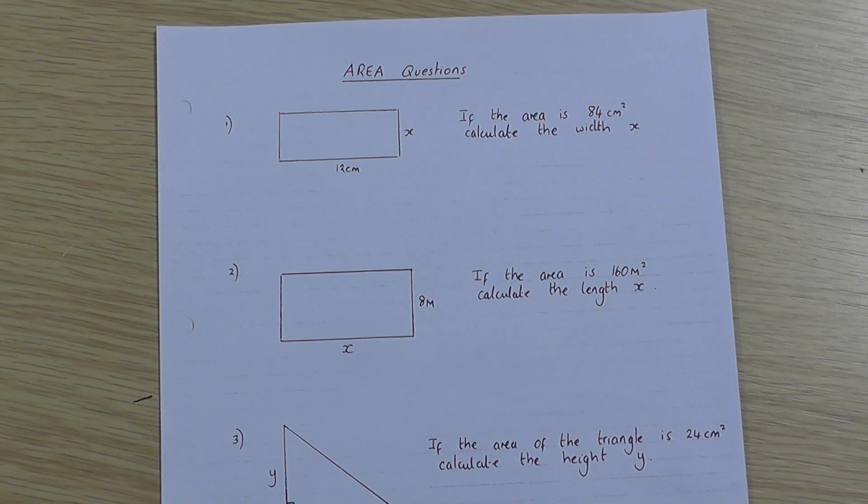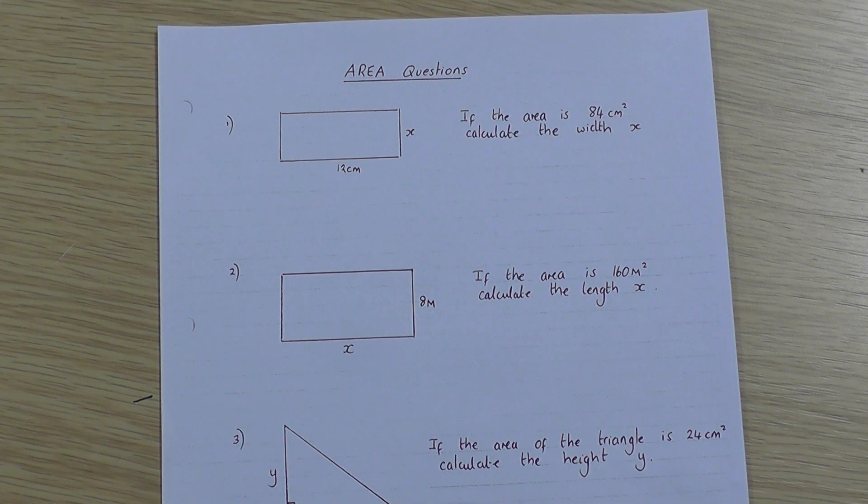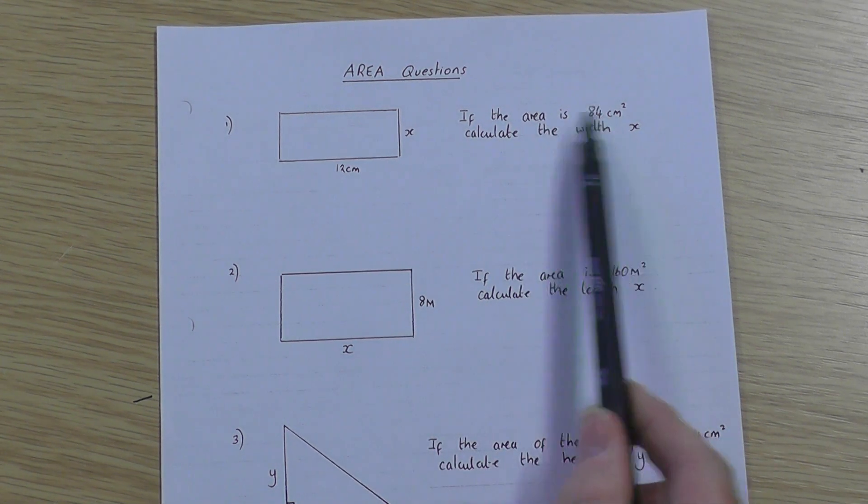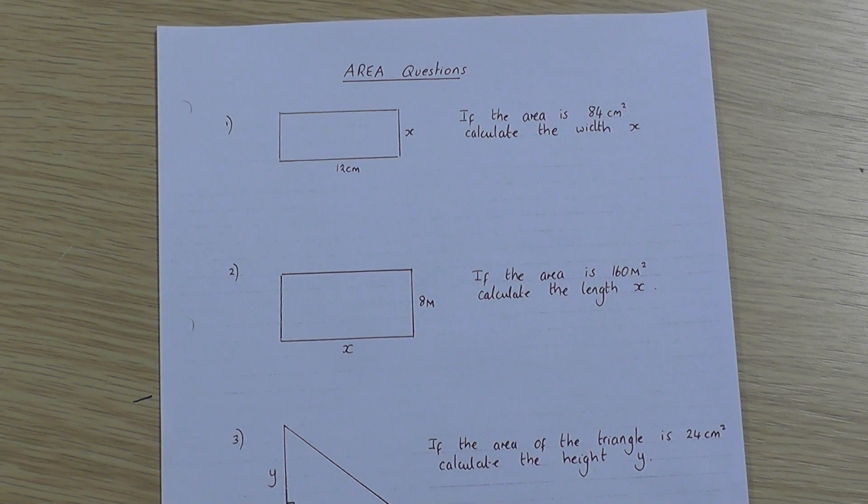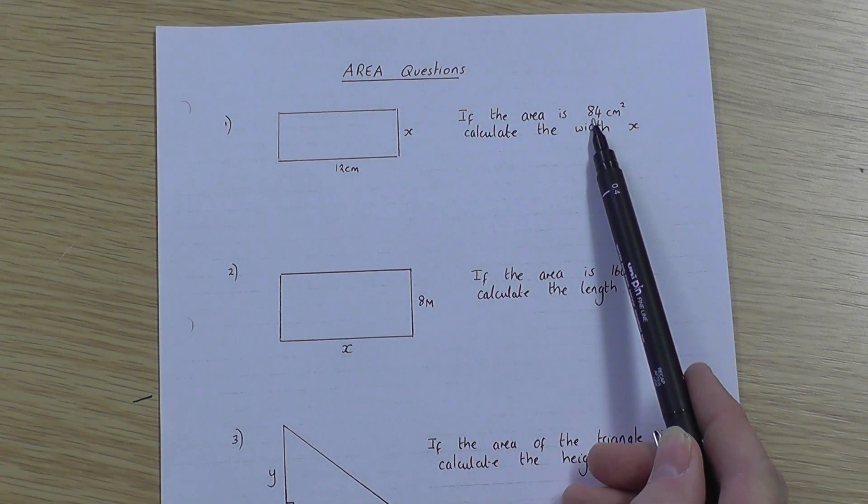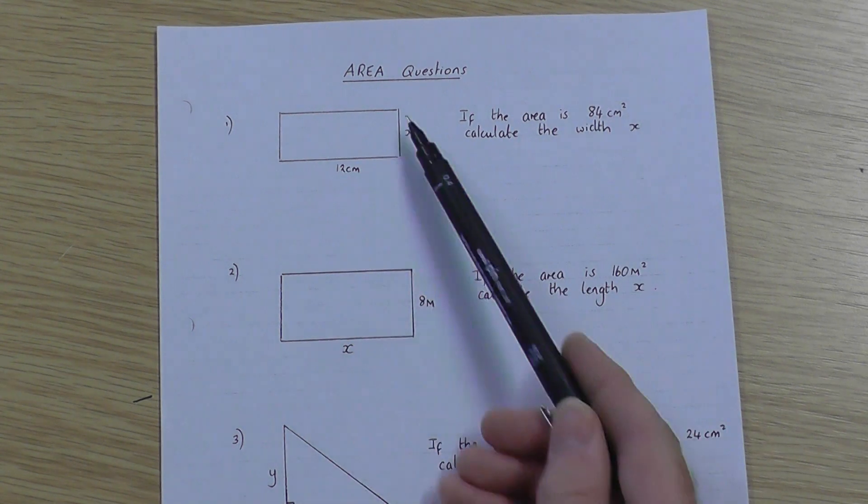A video now on basic area questions with a slight twist. In all these questions I'm going to do, I'm going to do five or six questions with you. You're given a shape and you're told what the area of the shape is, so you're not asked to work out the area. Now because you're told what the area is, you're going to be asked to work out one of the sides of the shape.